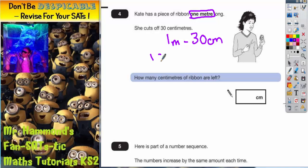So rather than one meter, we're going to write 100 centimeters. One meter is 100 centimeters. And then we're going to take off the 30 centimeters.